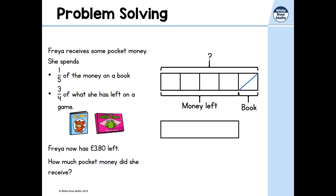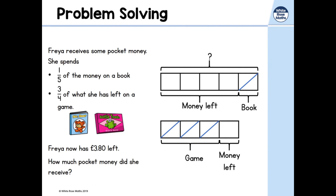Let's take the money that's left and carry on reading the problem. Three-quarters of what she has left she spends on the game, so let's divide that into four equal parts. Three-quarters is spent on the game, therefore one-quarter of what is left is what she has remaining. Freya now has £3.80 left — let's label that part.